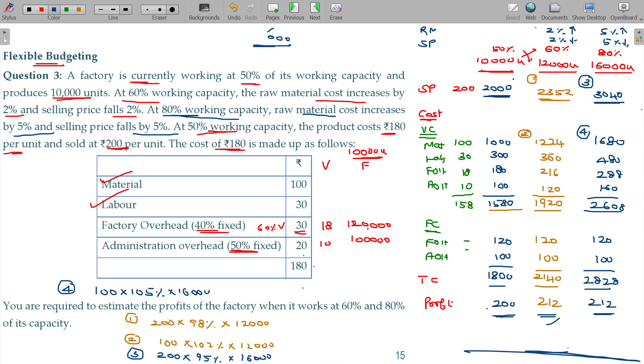You can see the profit remains the same up to 60 percent. At 50 percent level, at 60 point, at 80 point, this series of budgets at different levels is the flexible budget. So we have understood what is called flexible budget and we have seen an illustration on this also. Make a note of it.